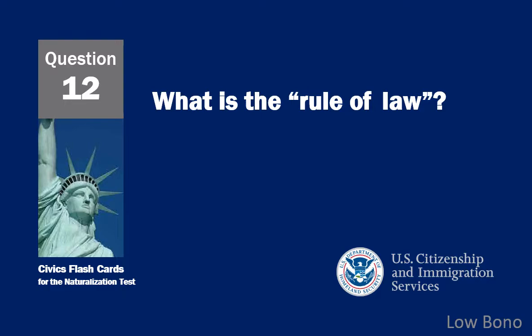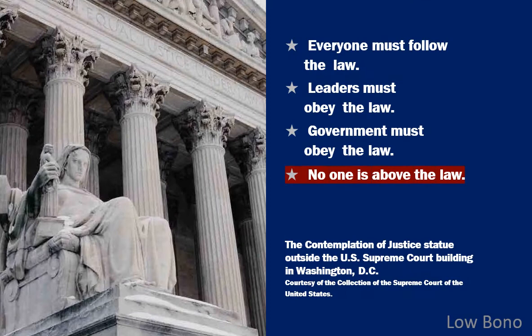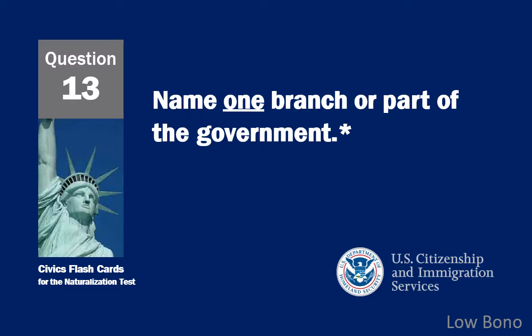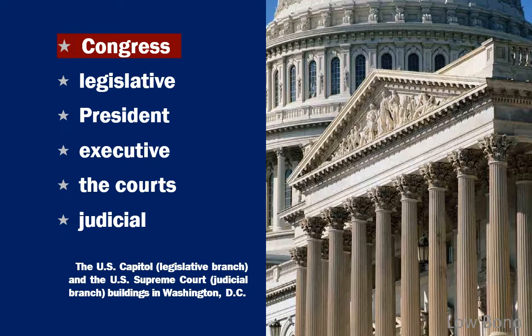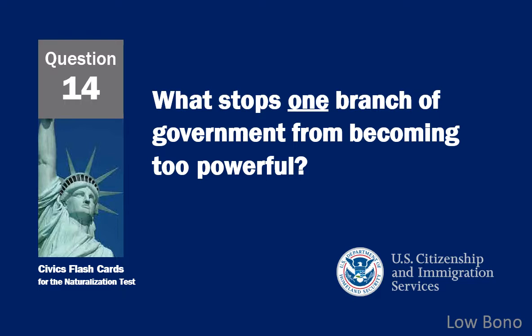What is the rule of law? No one is above the law. Name one branch or part of the government. Congress. What stops one branch of government from becoming too powerful? Separation of powers.